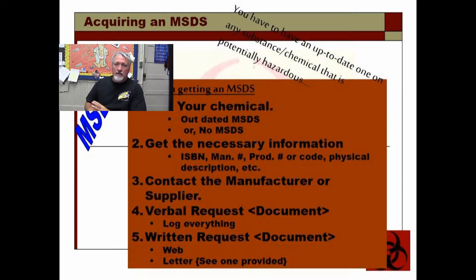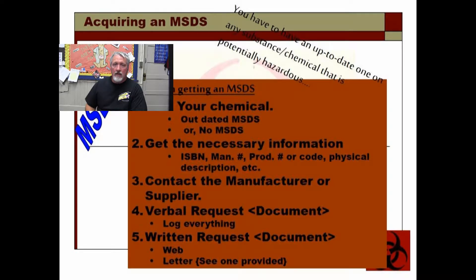Contact the manufacturer. There are several ways to do this — of course you can call them; the 800 number is usually on the product. Others like to use the internet, but there are some warnings about that. Some of these companies will try to charge you. They'll give you just enough information to whet your appetite, but then try to charge you to get the MSDS sheet. There should not be a charge for this. Companies are required to provide them free of charge if they sell the product. If you contact them directly or go to that company's website, they're supposed to provide it to you for free.